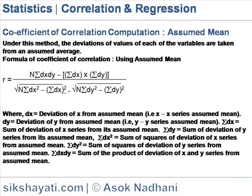Where dx is the deviation of x from the assumed mean, that is x minus the assumed mean of x series. dy is the deviation of y from the assumed mean, that is y minus the assumed mean of y series. Σdx is the sum of the deviations of the x series from its assumed mean. Σdy is the sum of the deviations of the y series from its assumed mean.